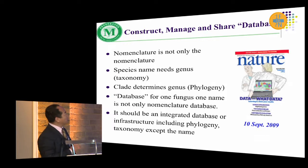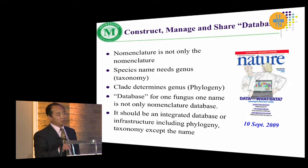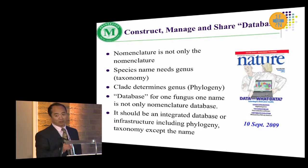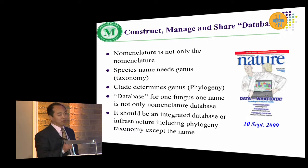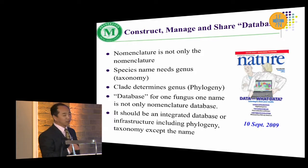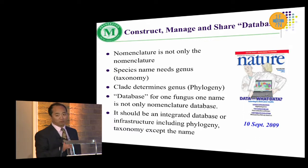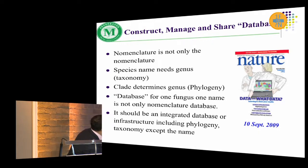Finally, many people think that the database should play the key role in one fungus one name. But I think nomenclature is not only nomenclature — species names need a genus, which means we need taxonomy. And if the clade determines the genus, then obviously we need phylogeny. So the database for one fungus one name is not only a nomenclature database — it should be an integrated database or infrastructure, including phylogeny, taxonomy, and names. That's my talk.